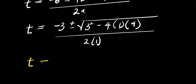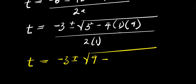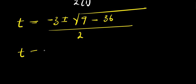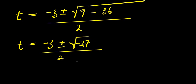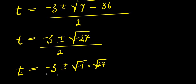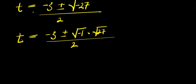Simplifying inside the square root: three squared is nine, minus four times one times nine is thirty-six, giving us nine minus thirty-six equals negative twenty-seven. So t equals negative three plus or minus square root of negative twenty-seven, divided by two. We can write square root of negative twenty-seven as square root of negative one times square root of twenty-seven, and square root of negative one is i.